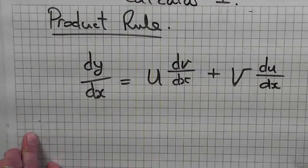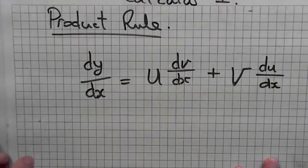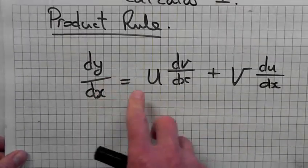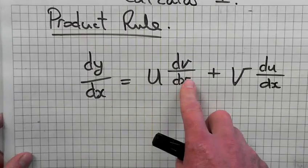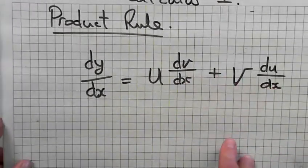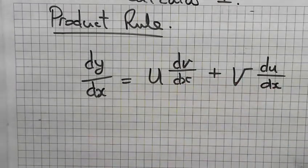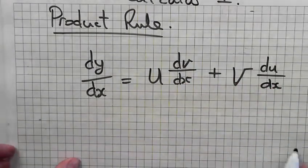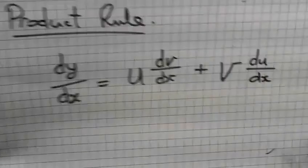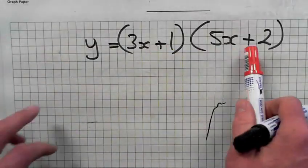Right, look up the product rule: dy/dx = u times dv/dx plus v times du/dx. When do we use it? Product means multiply, so here...